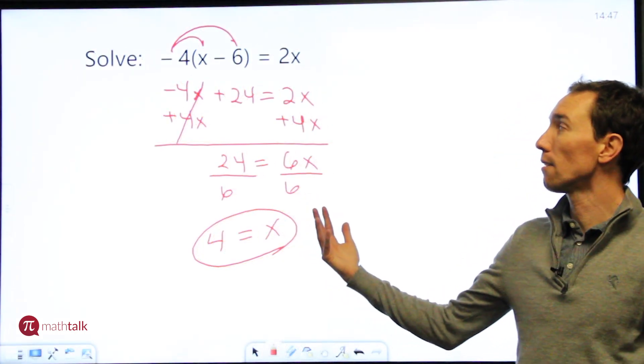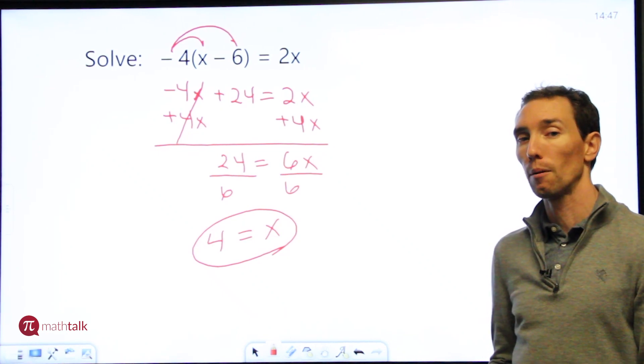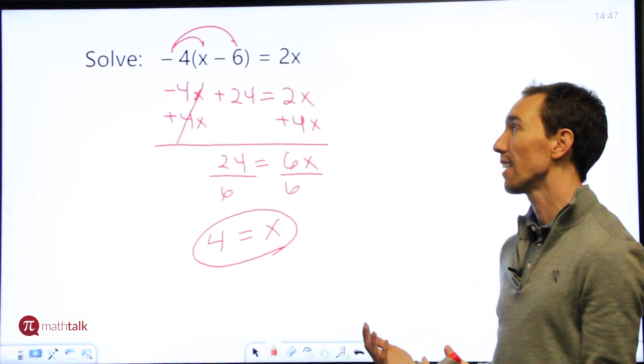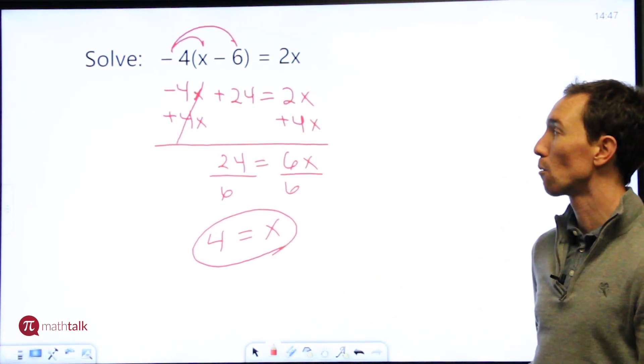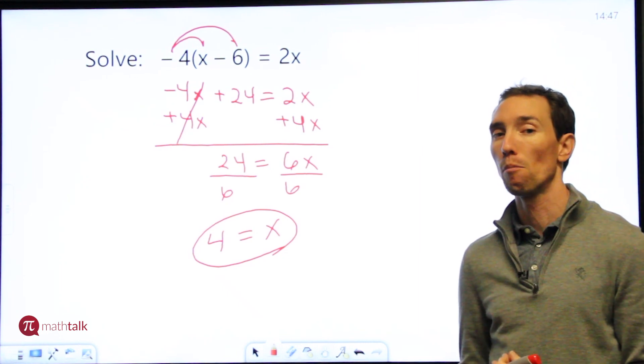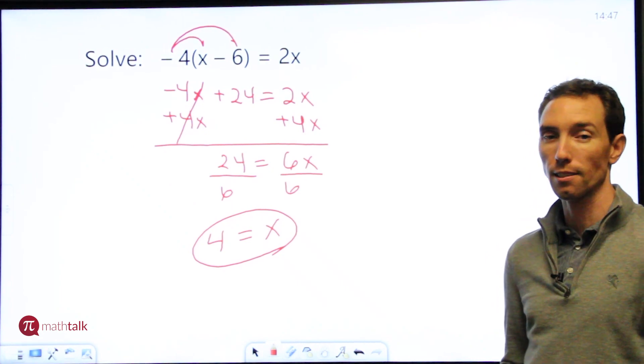When you have problems that involve parentheses like this you really want to look at using the distributive property. Take the number on the outside, multiply it by every number or value on the inside, and then you can start solving your equation. I hope this helps when you get to multi-step equations. Remember they take multiple steps, so take it one at a time and start simplifying from there and you'll get your solution.